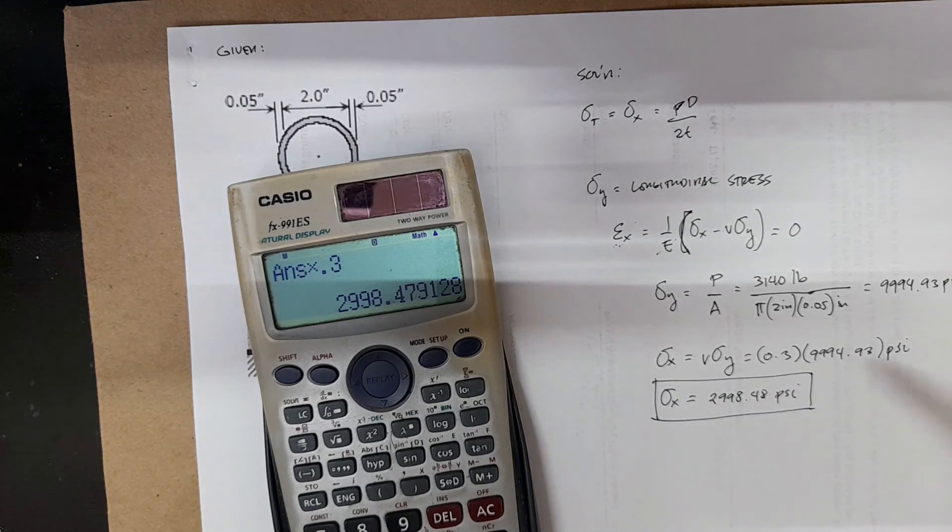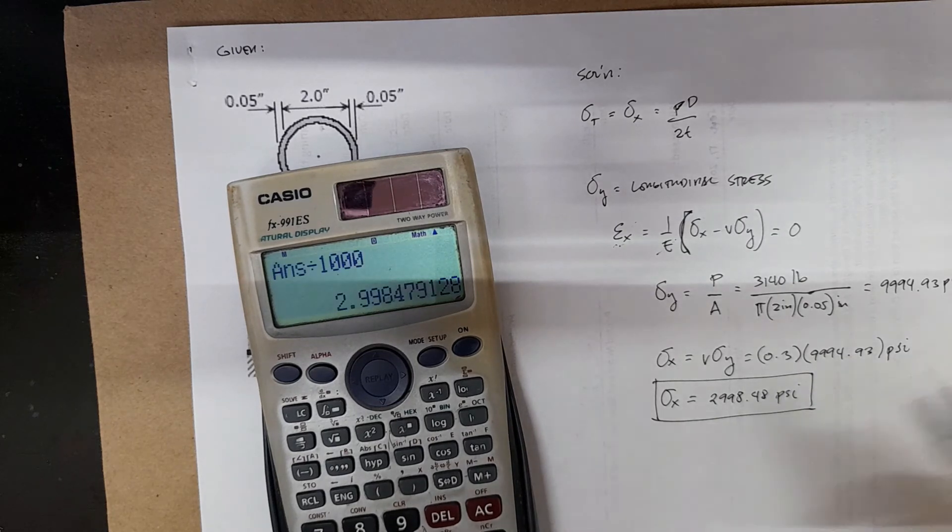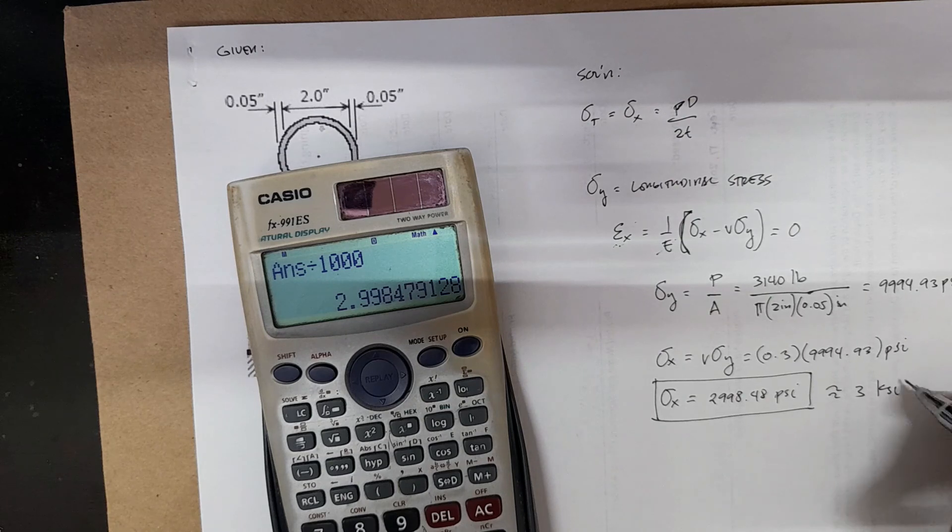You can also express this in terms of ksi. Divided by 1,000, that's approximately 2.99, or roughly 3 ksi.